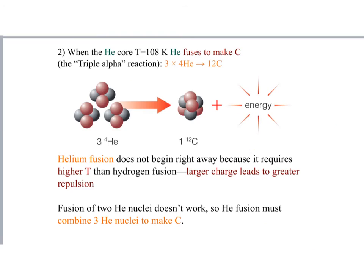That core stays inert until the temperature becomes 10^8 Kelvins — that's 100 million Kelvin. That's the moment when helium is able to fuse into the next heavier element, which is carbon. That fusion process of helium into carbon is called the triple alpha reaction, because it takes three helium nuclei to make one nucleus of carbon. It's important to note that the fusion of two helium nuclei actually doesn't work — it needs three.